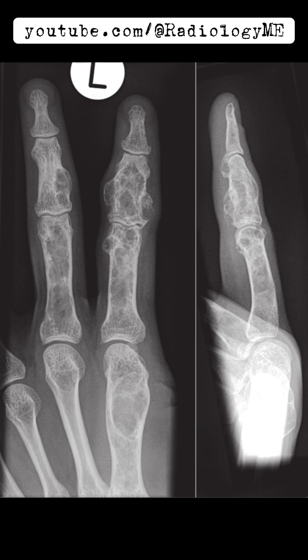The expansion of these lesions is quite typical for enchondromas. Enchondromas are the most common benign lesions that can occur in any bone, especially in the small bones of the hands and feet, like in this case. They often contain chondroid matrix, although in the phalanges, they can sometimes be entirely lucent, which we seem to be seeing here.